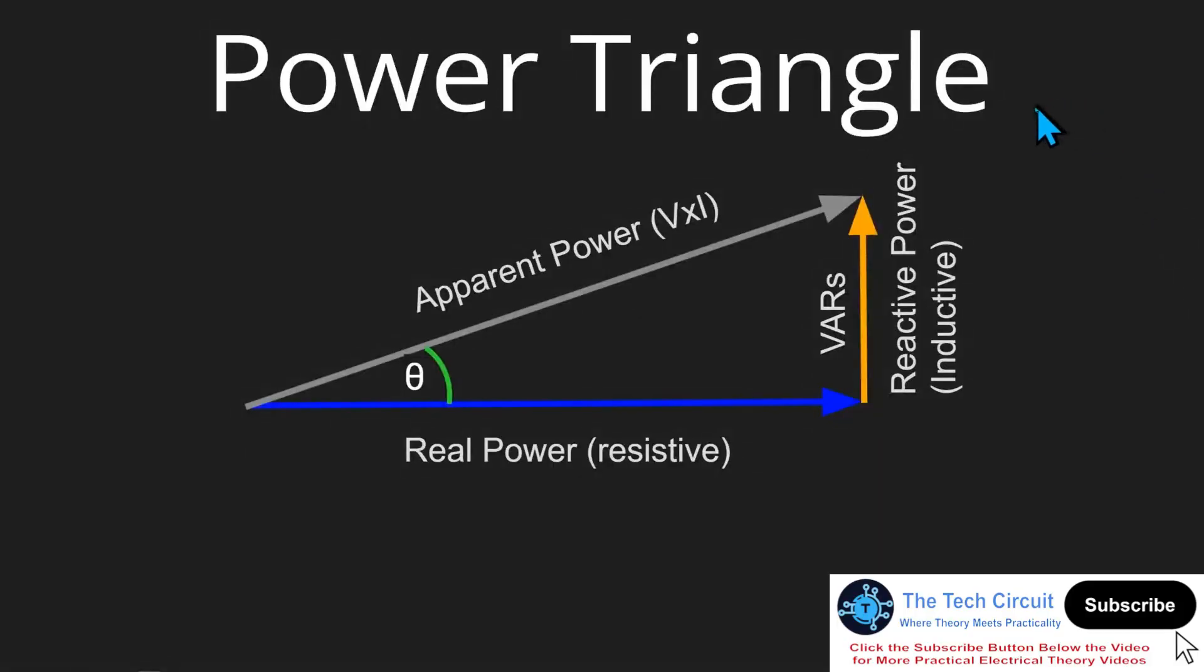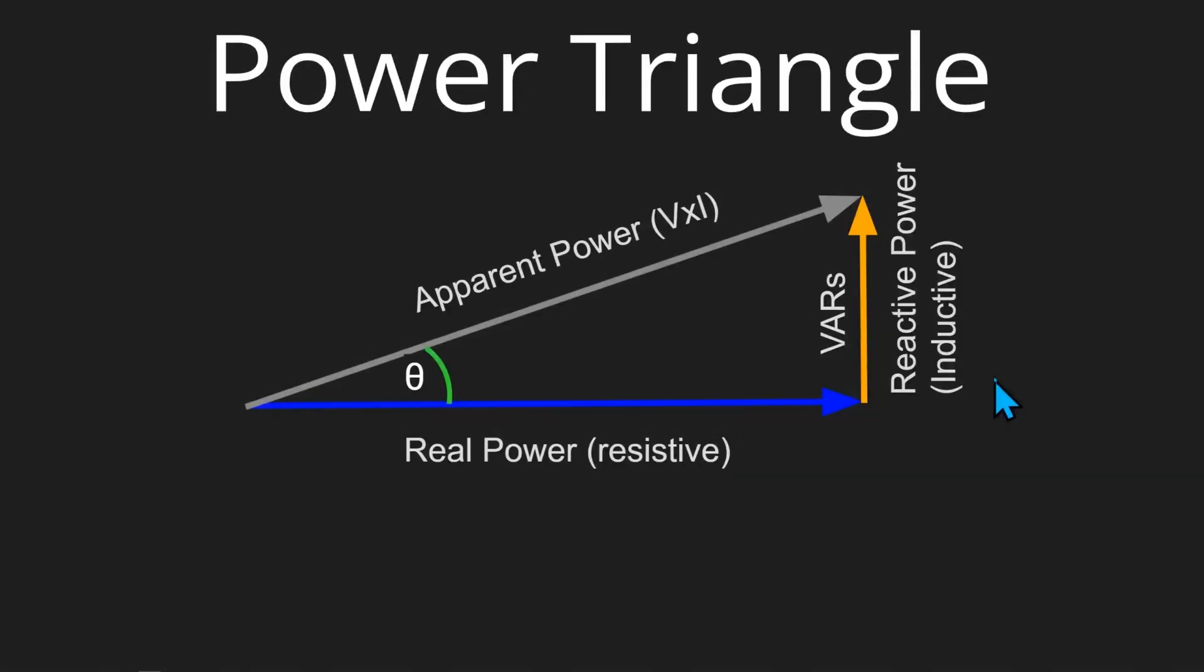Let's refer to the power triangle. The bottom side, or the x-axis, is real power, the work the light bulb is doing. The vertical side, or the y-axis, is VARs.